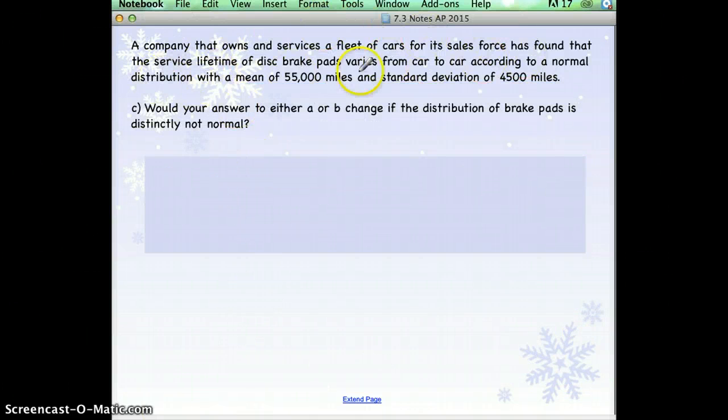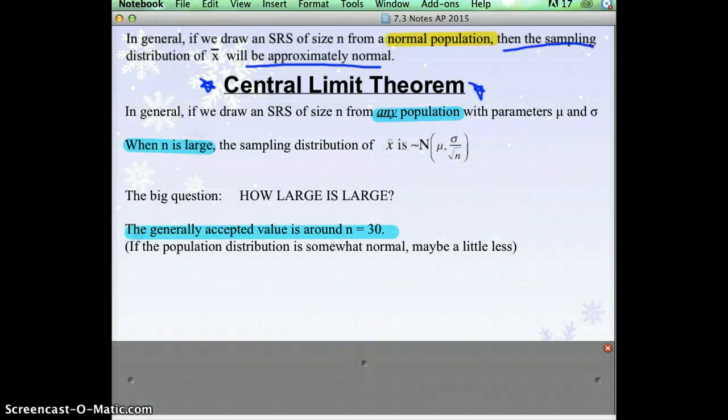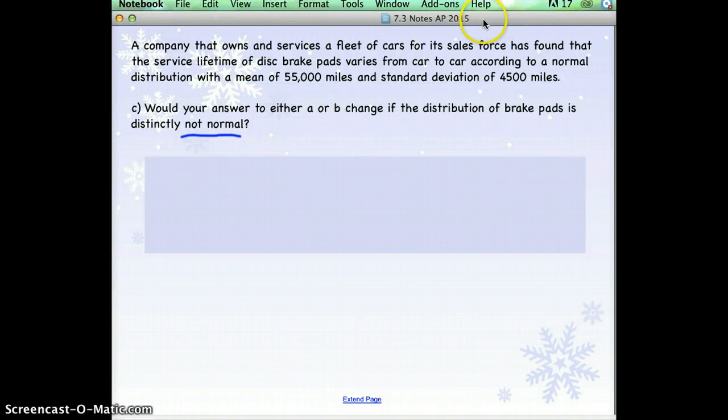Same information at the top. Now it says, would your answer to either A or B change if the distribution of brake pads is not normal? So, go back to the original problem. Here, up in the original problem, it says that it varies from car to car according to a normal distribution. They told us it was normal. What if they didn't? What if they left this part out? What if it wasn't normal?